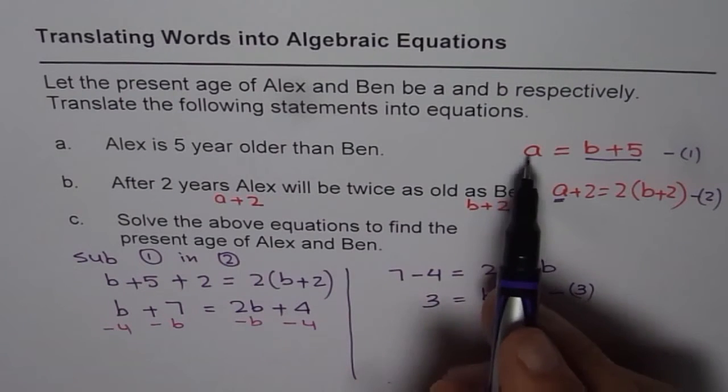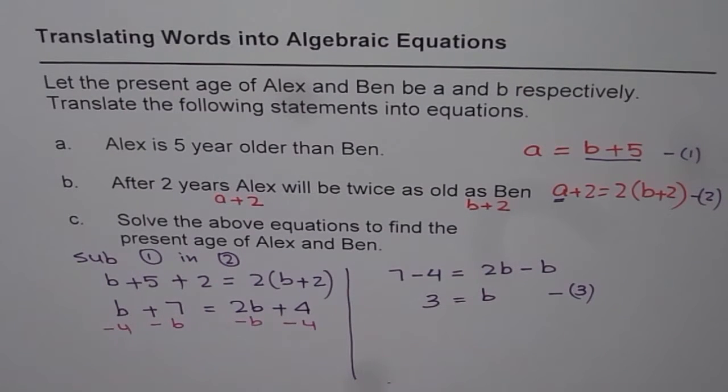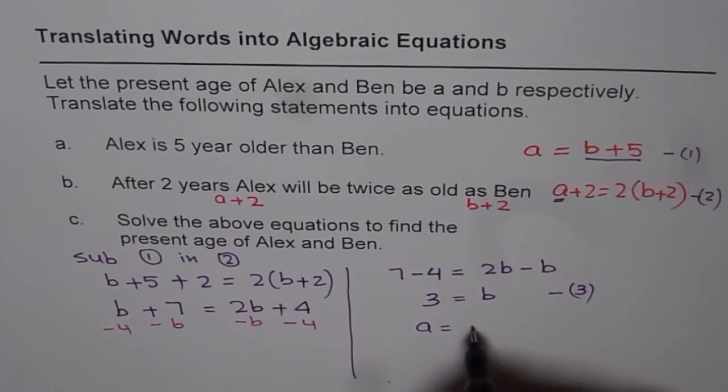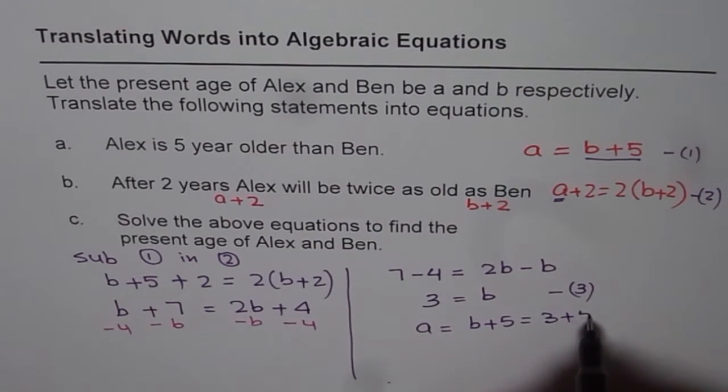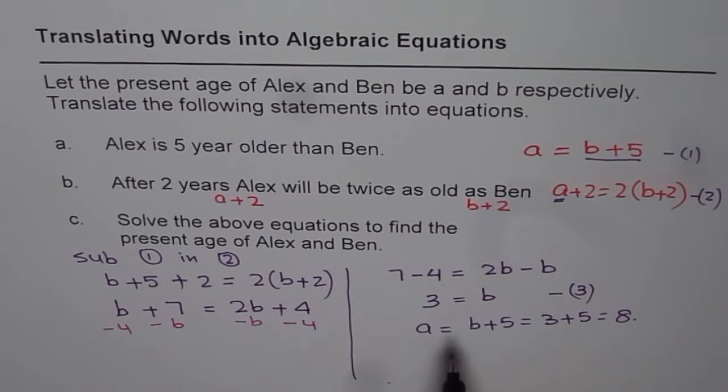If Ben is 3 years old, what is the age of Alex? Alex is Ben plus 5, so it is 3 plus 5, which is 8. So Alex is 8 years old.